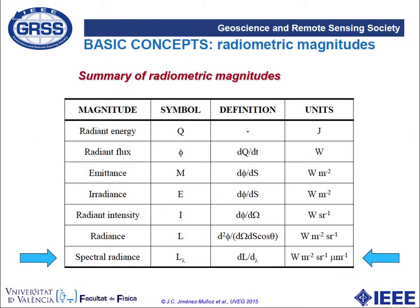This table provides a summary of the basic radiometric magnitudes. The main variable is the spectral radiance, which is the energy per unit area for a given view angle and a given wavelength.